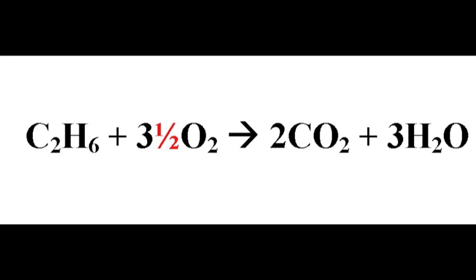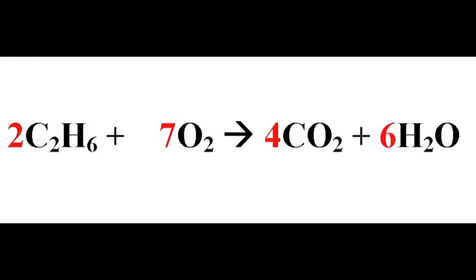A chemist is going to be bothered by this because you're not allowed to have half a molecule — you can only have a whole number of molecules, in the same way that you can only have a whole number of people in a room and not half a person. To get around this problem, the solution is to double the number of every single molecule in the equation. So one ethane becomes two, three and a half oxygen becomes seven, two carbon dioxide becomes four, and three water becomes six. Now the equation is balanced.